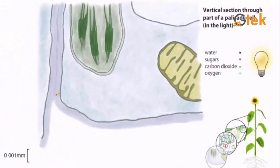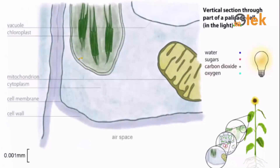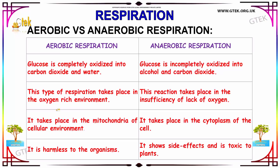Inside the leaf cell, it has mitochondria, chloroplast, cell membrane, and cell wall. In aerobic respiration, the glucose is completely oxidized into carbon dioxide and water, whereas in anaerobic respiration, the glucose is incompletely oxidized into alcohol and carbon dioxide.